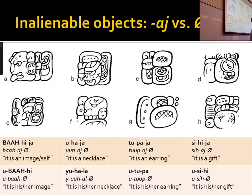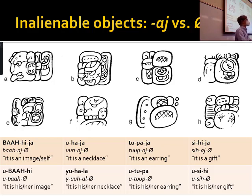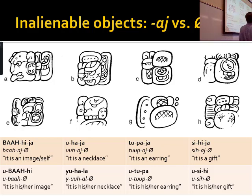This idea that certain things must be attached, and when they're unattached it's unusual and requires a marker — 'tupac' refers to earrings in that unattached state. Gifts have to be given — same thing. When you say it's a gift, a Maya person would say 'it's my gift' or 'it's your gift,' but sometimes they could say just 'a gift' and all we're left doing is saying 'this is a gift' — though that's not exactly what they're trying to say. It's a gift that doesn't have a giver, or you don't know the giver.